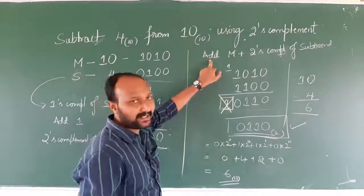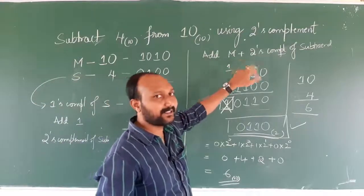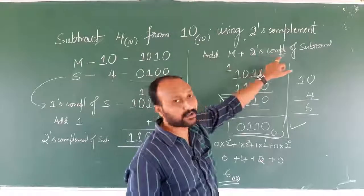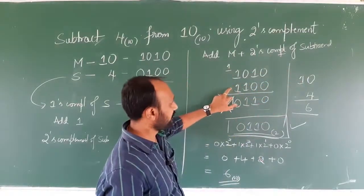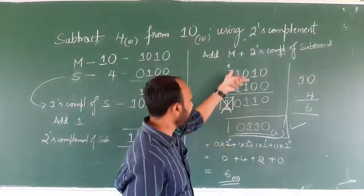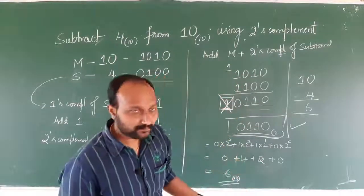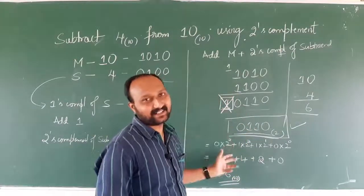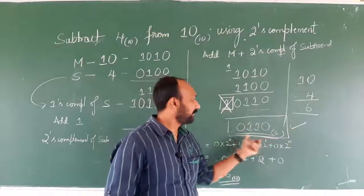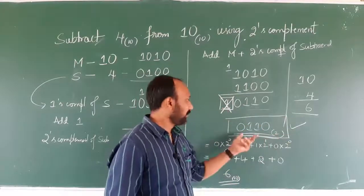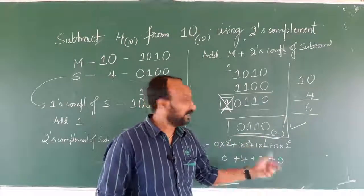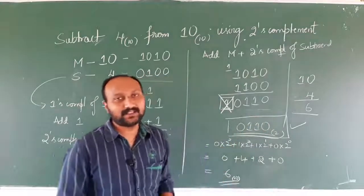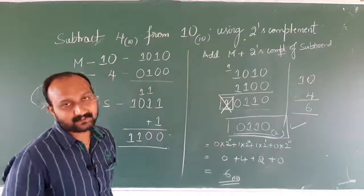In the second stage, we need to add minuend plus the new number obtained after two's complement of the subtrahend — that is, adding minuend plus two's complement of subtrahend. By adding, we got this value. Here we came up with an extra bit; in two's complement subtraction method, if we get an extra bit, that bit needs to be discarded. After discarding, this is the final answer. For cross-verification, we can convert this binary to decimal, and after conversion we confirmed that the answer is correct. This is how we solve a problem using two's complement subtraction.